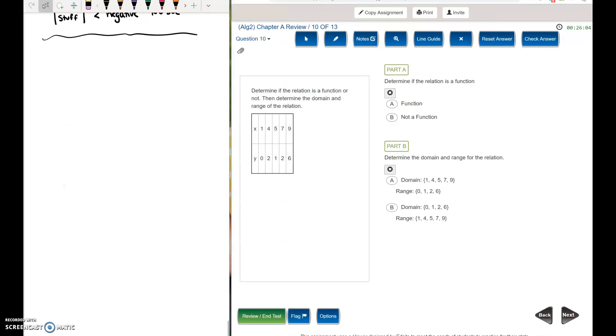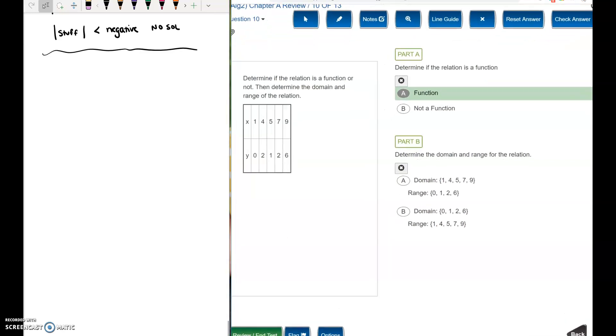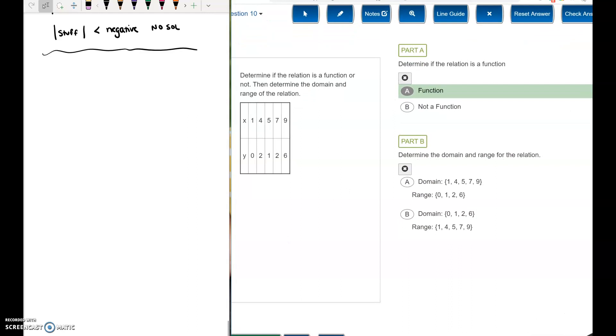All right. Question number 10. Determine if the relation is a function or not. You're looking at the X values. Are there repeated X values? The X's do not repeat. It is a function. Domain and range. Domain is the X values. Range is the Y values. So our X values are 1, 4, 5, 7, 9. I want that to be in my domain. I'm hoping that is the easiest question on the test. And the next one as well.